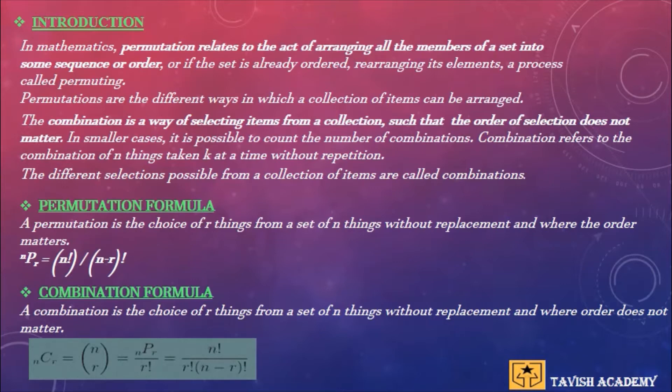In smaller cases, it is possible to count the number of combinations. Combination refers to the combination of n things taken k at a time without repetition. Therefore, the different selections possible from a collection of items is called combinations.